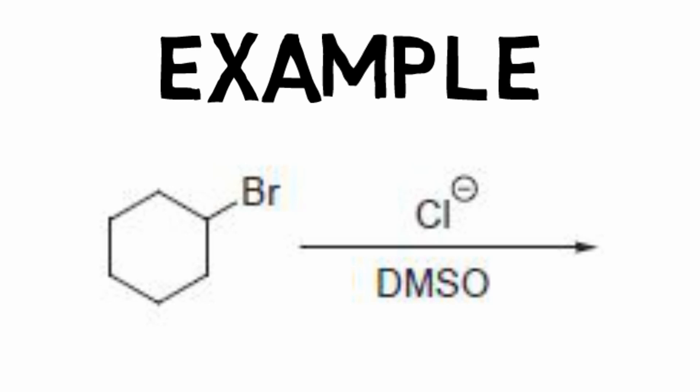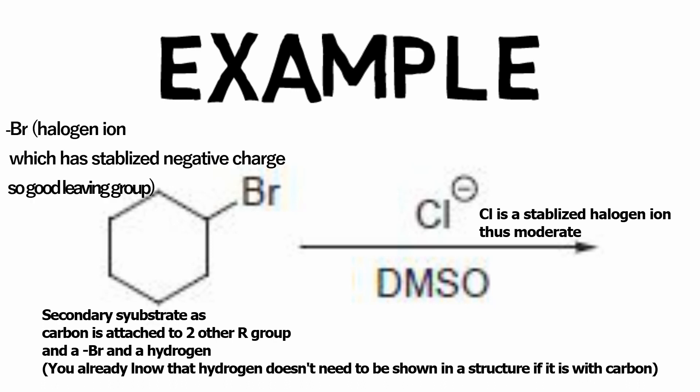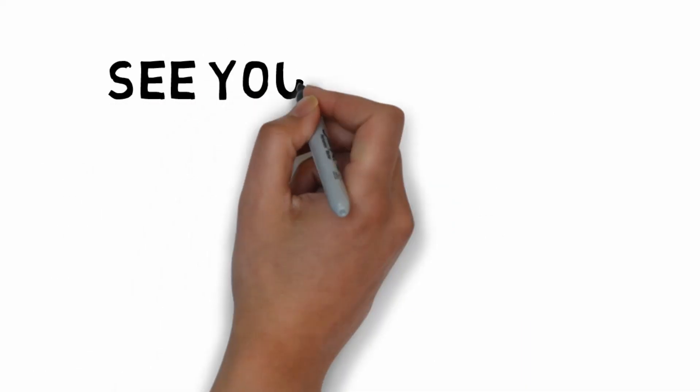If we look at the compound, we'll see the electrophilic substrate is secondary. So, we cannot exactly tell if it will follow SN1 or SN2. The nucleophile is moderate, as it's a halogen ion. It doesn't tell much either. Then, factor 3 is the leaving group. It's a good leaving group. It doesn't tell much either. Now, the solvent is polar aprotic, which favors SN2. So, SN2 wins in this case.